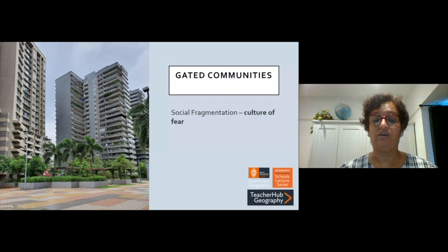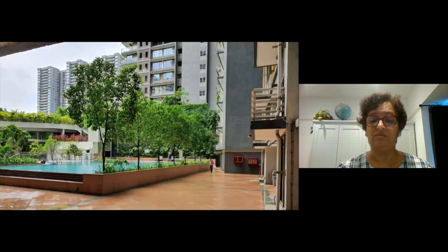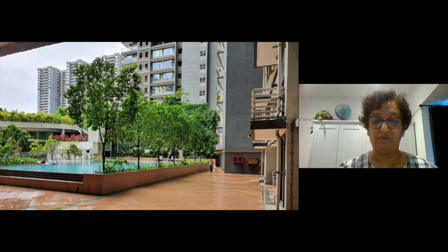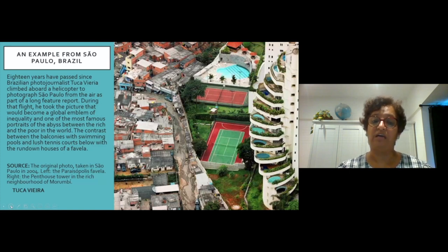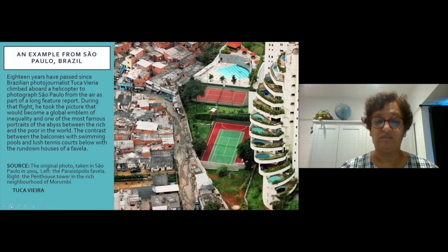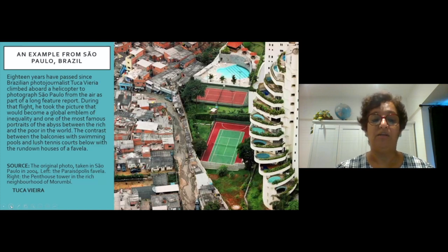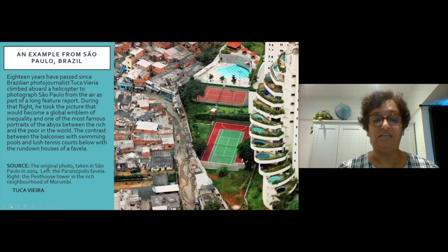There is a culture of fear about living next to slum communities. Affluent apartment blocks have swimming pools and lush green vegetation. A photograph taken 18 years ago by Cuca Vieira from São Paulo, Brazil, highlights the contrast between balconies, swimming pools, and lush tennis courts next to a favela. This inequality persists in many parts of the world today.